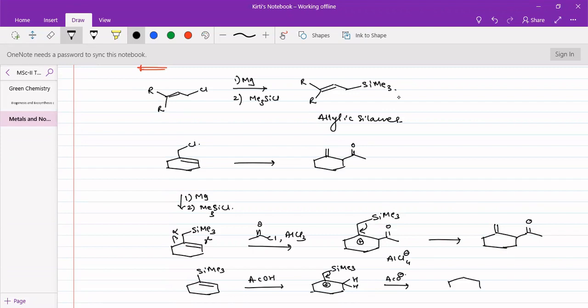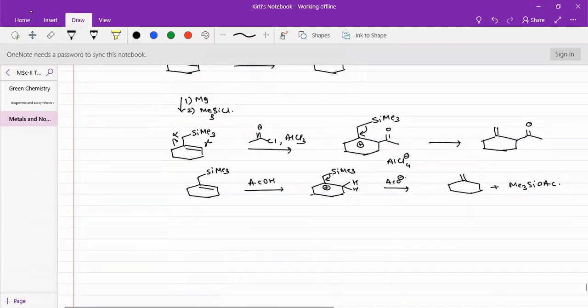This then undergoes elimination of trimethyl silyl group, where this acetate ion will be present. This acetate ion will facilitate that particular reaction. So what we have got here is Si-Me3 has been eliminated and proton is added across here. So that way we can utilize this particular strategy to create such reactions.